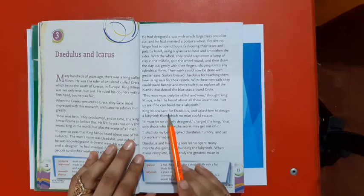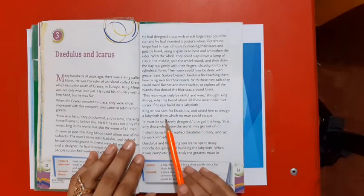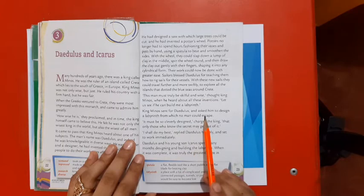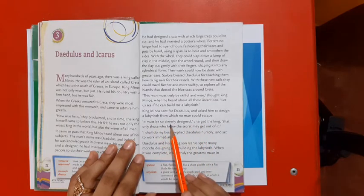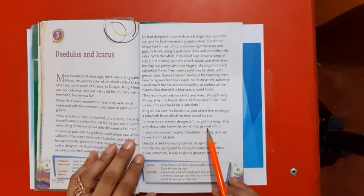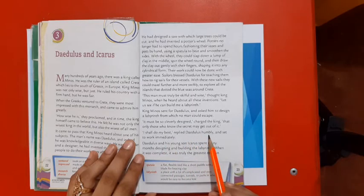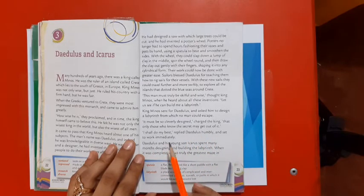Let us see if he can build me a labyrinth. King Minos sent for Daedalus and asked him to design a labyrinth from which no man could escape. It must be so cleverly designed, charged the king, that only those who know the secret may get out of it. I shall do my best, replied Daedalus humbly, and set to work immediately.